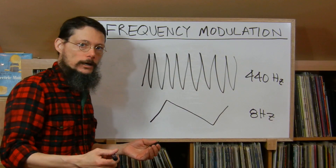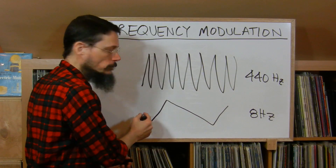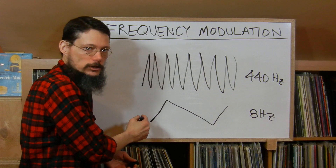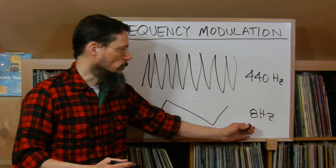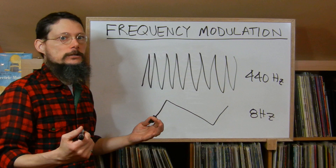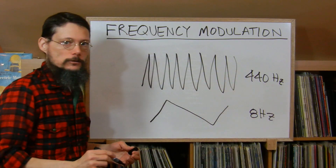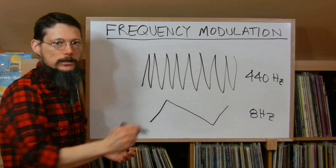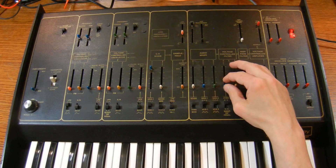One interesting thing you can do is take the frequency of the modulating wave and instead of making it a low frequency wave, you can bump it up until it's in the audio range, or very close to the fundamental oscillator that you're playing. It's easier to show these large FM effects on the ARP Odyssey.